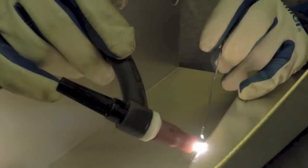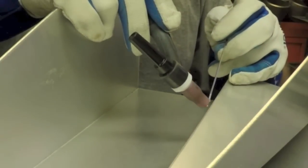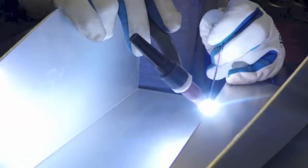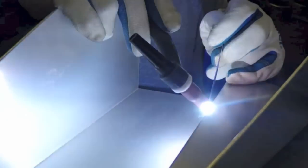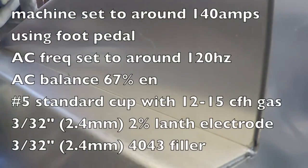He's using 3/32nd, that's 2.4 millimeter electrode and the same size filler wire, sometimes even 1/16th, 1.6 millimeter filler wire, especially for tacking. But for the long runs, using the larger filler wire.